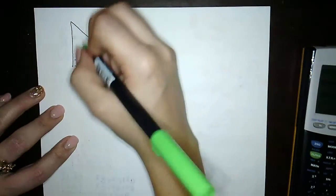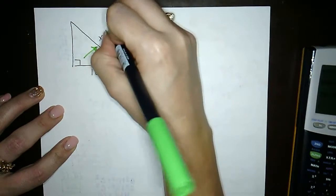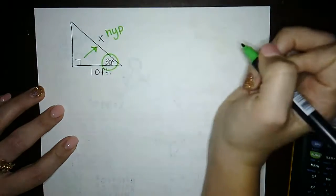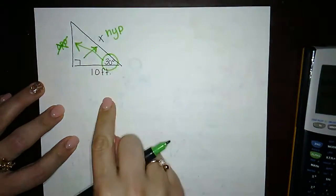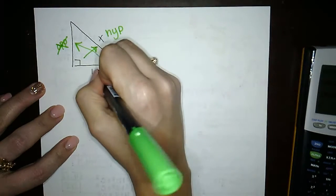Find your hypotenuse first, crossing the right angle. This is the angle they give us, so we're looking. There's the opposite. Nothing's there. We're left with the adjacent side.